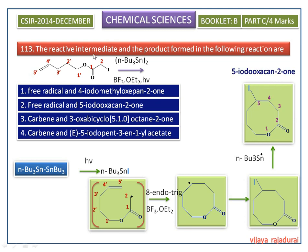So, the intermediate in this reaction is a free radical and the product is 5-iodo-oxan-2-one. The correct answer is option number 2.